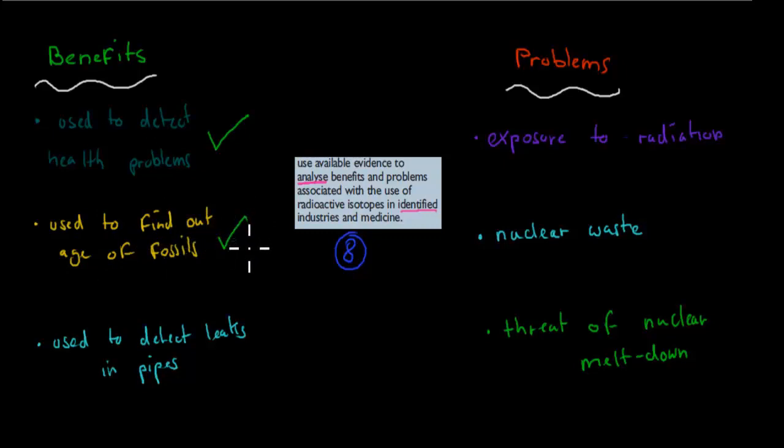It's used to find the age of fossils. This was, for example, carbon-14, which allowed us to be able to tell how old something was. And then it was also used to detect leaks in pipes. Again, there are a couple of radioisotopes which allowed that to happen. It's really beneficial because then we can actually find problems in pipes which we would otherwise not be able to see. These are some of the benefits.